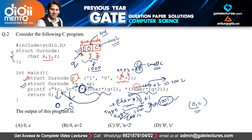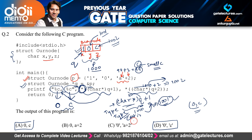Now the question is whether to choose option A or option D. Notice that in this printf statement, nowhere have we used single inverted commas. The examiner wants to confuse you — even after finding the correct answer, you might mark option D because we are printing with %c. But the output will only print 0 and c, so option A is the correct answer. Don't confuse it with option D.